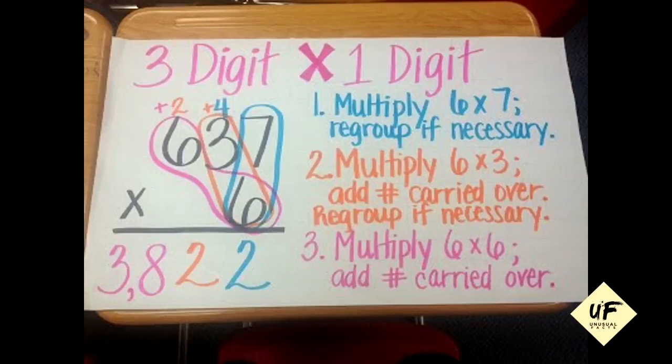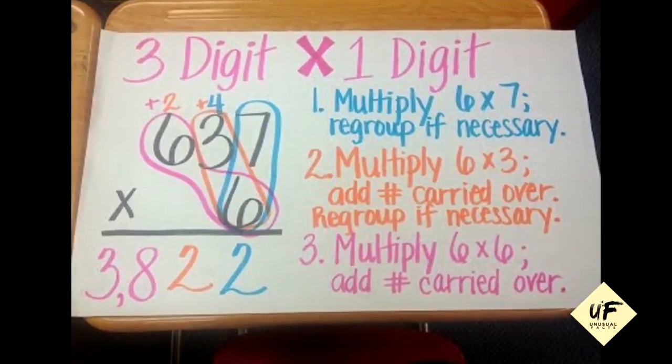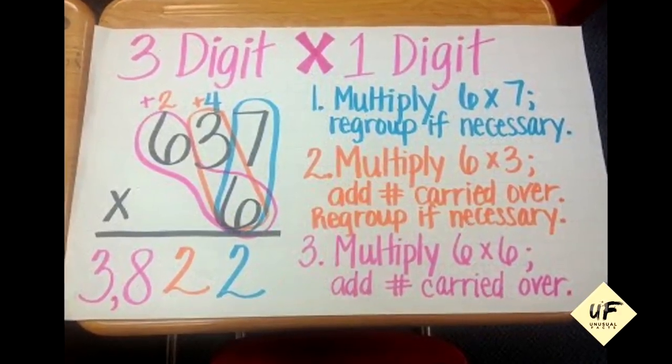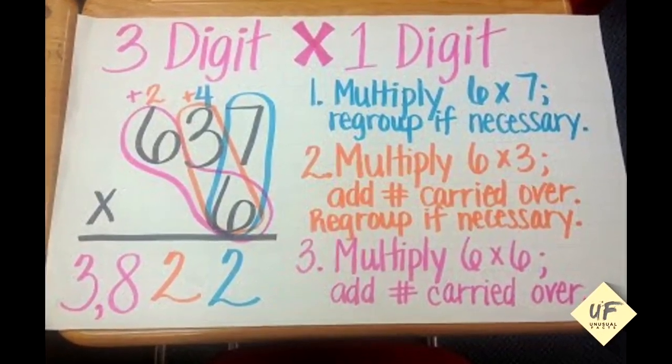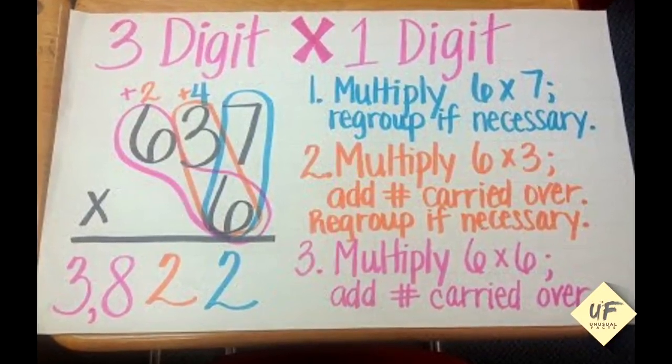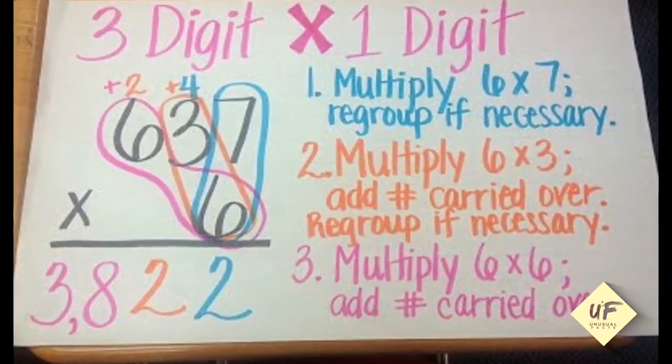Step two: six times three is 18, plus four is 22. So you put the two under the three and the other two above the additional six. Step three: multiply six times six and add the carried over number. Six times six is 36, plus two is 38. So 637 times six is 3,822.